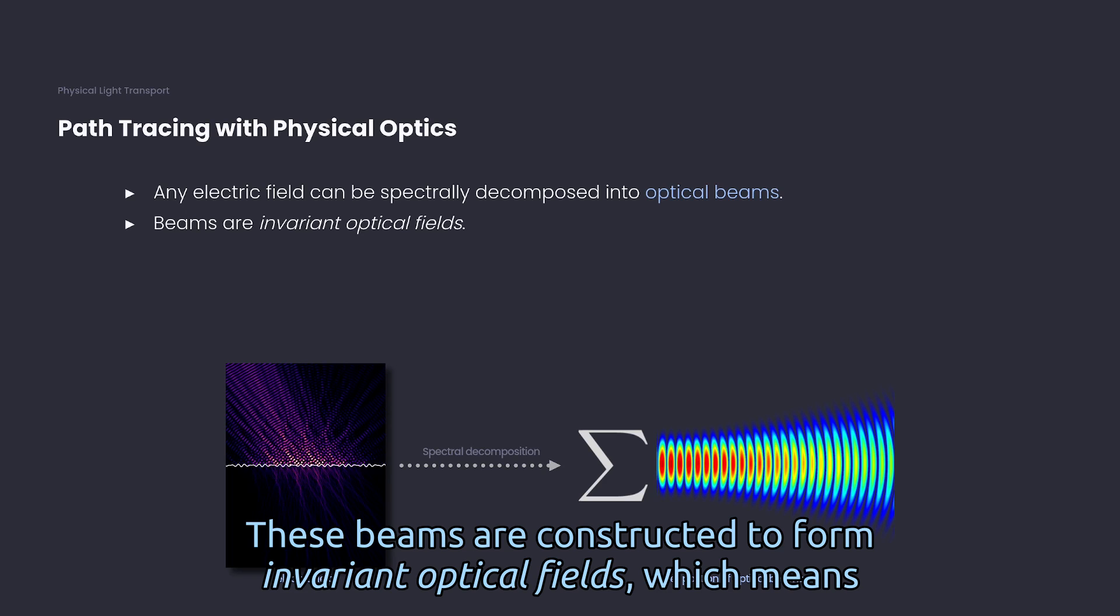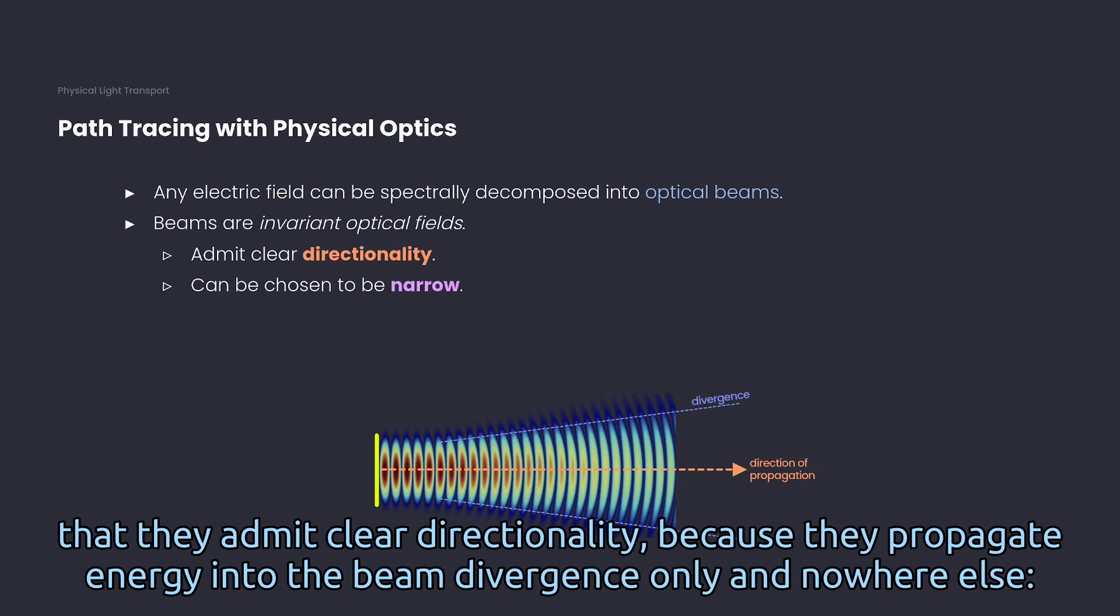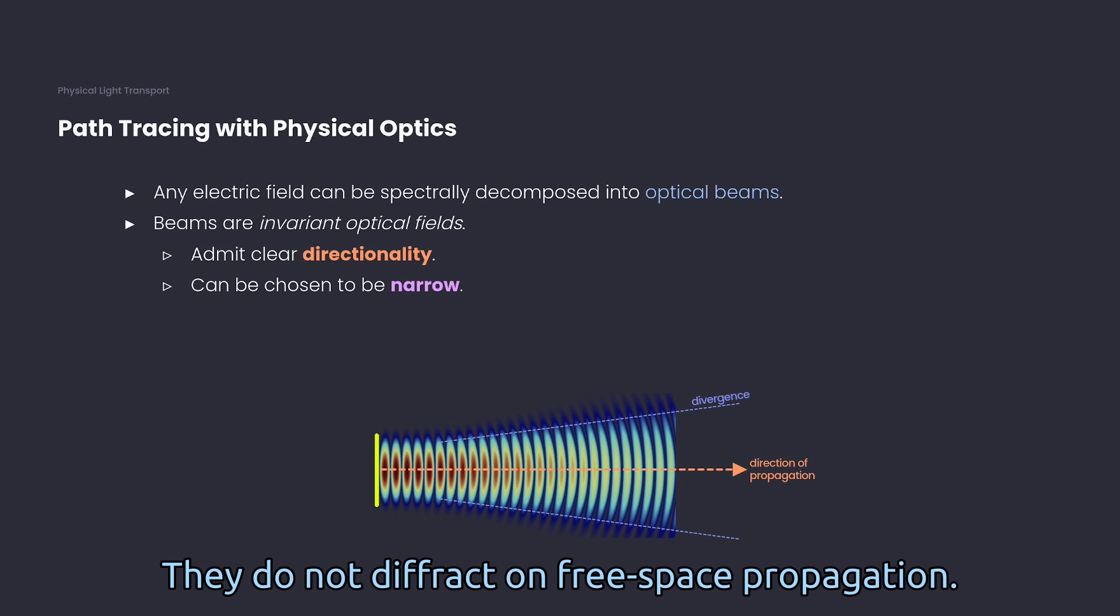These beams are constructed to form invariant optical fields, which means that they admit clear directionality, because they propagate energy into the beam divergence only and nowhere else. They do not diffract on free space propagation.